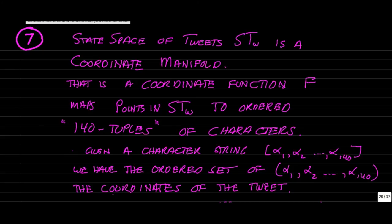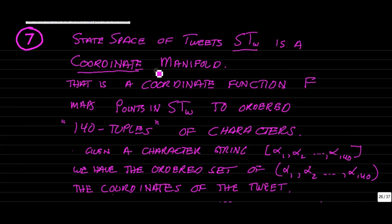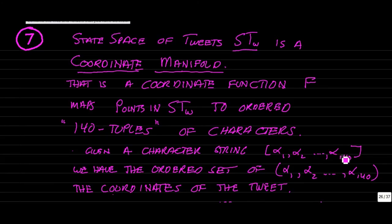Next we want to look at another characterization of the state space of tweets, STW. We can create a coordinate function that maps points in the state space to ordered 140-tuples of characters. Given a character string that represents a tweet corresponding to a point in the state space, that character string can also be viewed as an ordered set of 140 characters — this ordered 140-tuple written like numerical coordinates, as in R-n, but instead of numbers we have the characters in the Twitter character set.